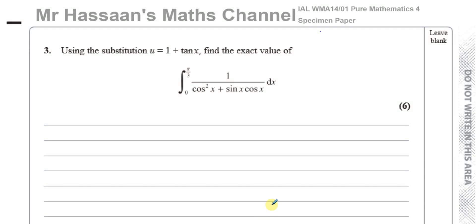Welcome back. This is Mr. Hassan's Maths Channel, and this is question number three from the International A-Level Pure Mathematics P4 Specimen Paper. This is a question about integration by substitution. We're asked to use the substitution u equals 1 plus tan x to find the exact value of the integral of 1 over (cos²x + sin x · cos x) dx, integrated between 0 and π/3.